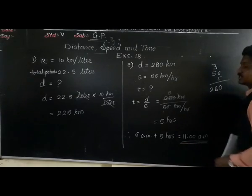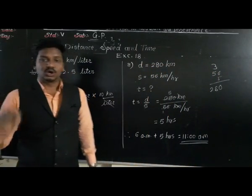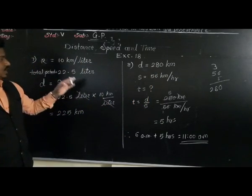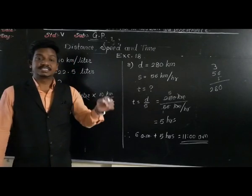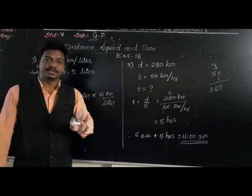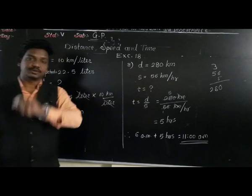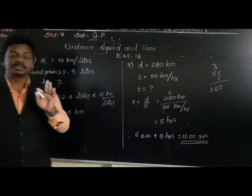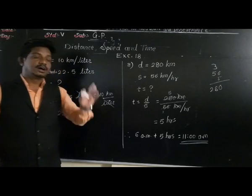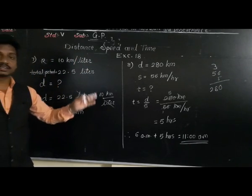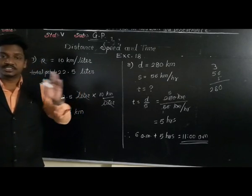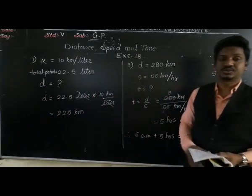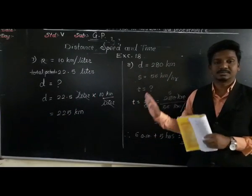So in this way, out of the 3 terms — distance, speed and time — any 2 will be given and 1 we have to find. Use the three formulae accordingly. Memorise and understand them. The calculation is very easy — just understand the concept. I hope you have understood. If you have any doubt, ask during the doubt session. Thank you for today and have a nice day.